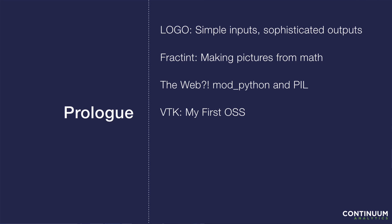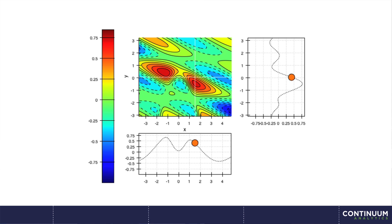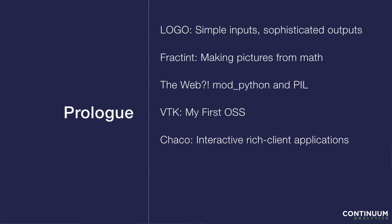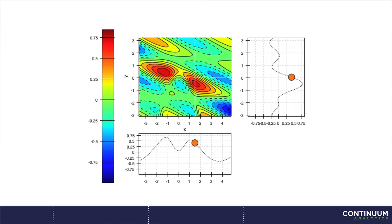A little bit later, my next in-depth foray into open source was a library called Chaco, which I worked on with Peter Wang at a previous company. It was a library for interactive rich client applications. I really loved it — it had a 3D function explorer where you could hover over the contour map of a function and the plots on the side would update. But the thing about Chaco is I learned a couple of lessons: it was a bit fiddly, a bit hard to use. It wasn't something you could use quickly or in a data science-y way. It took a lot of work and effort to get things out of it.